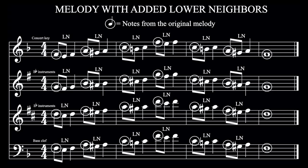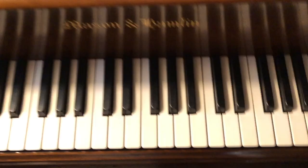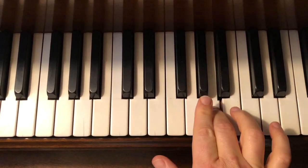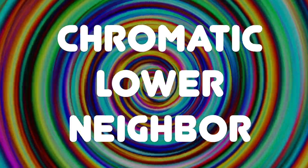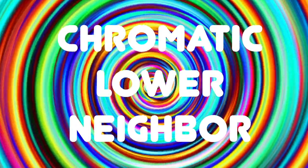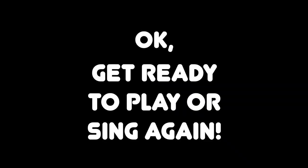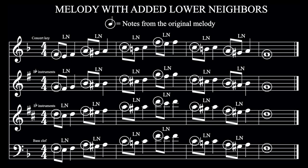Now we'll do the same thing with lower neighbors. For this exercise, we'll do lower neighbors as half steps. Instead of going one note down in the scale, we'll always go one note down on the piano — what might be to a black key instead of a white key, for instance. We can call these chromatic lower neighbors. I really like the term chromatic because it implies color. Chromatic neighbors are more colorful. In jazz, we call these types of phrases bluesy, or we might call the notes blue notes. Get ready to play or sing again.